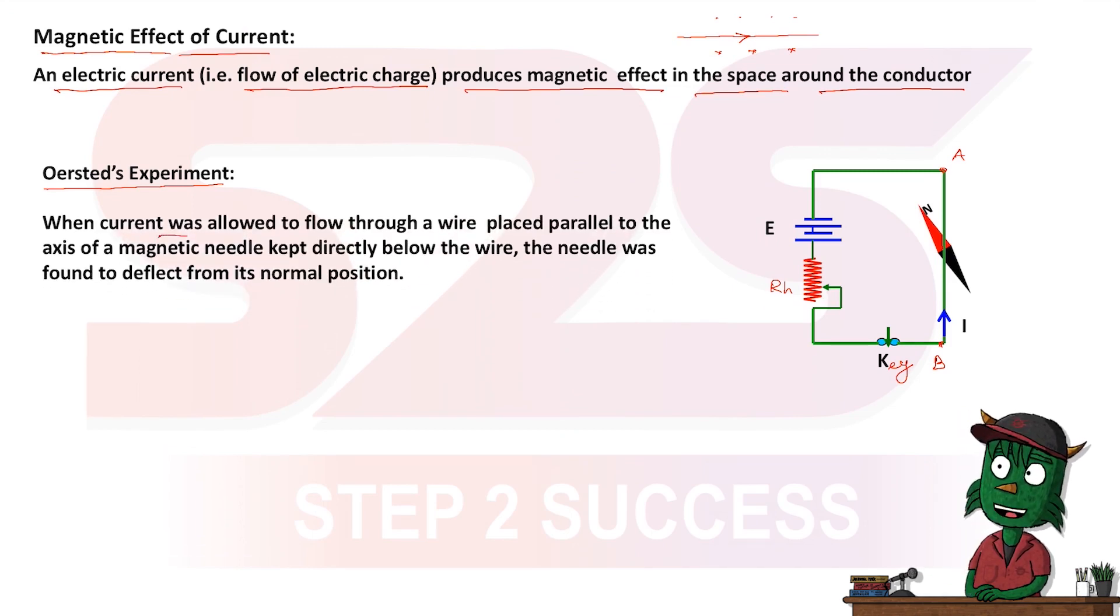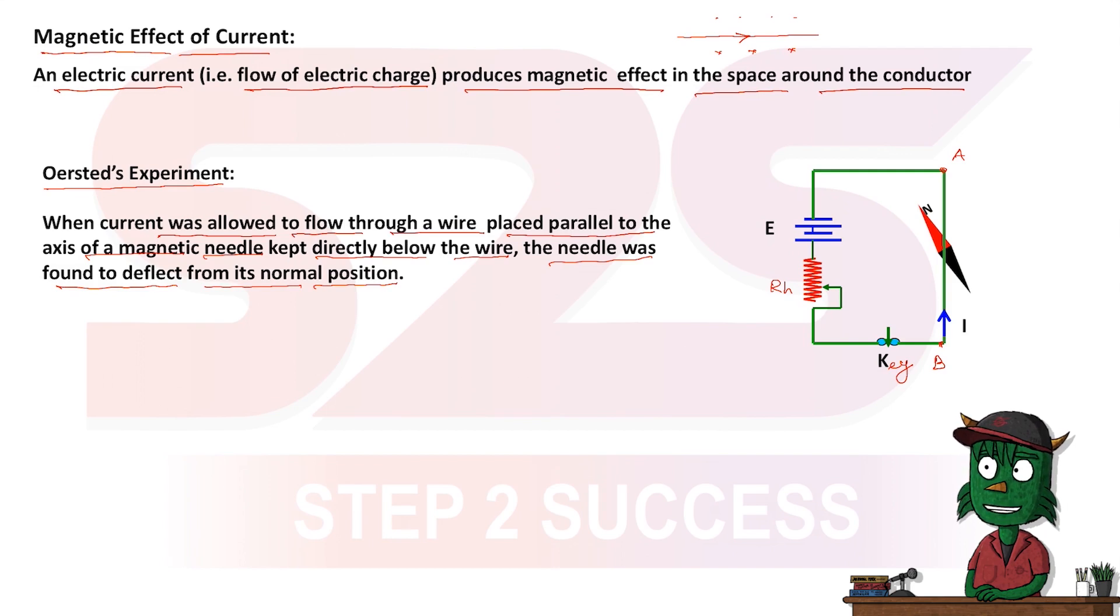When current was allowed to flow through a wire placed parallel to the axis of a magnetic needle kept directly below the wire, the needle was found to deflect from its normal position. It is clear that this deflection is due to production of a magnetic field.